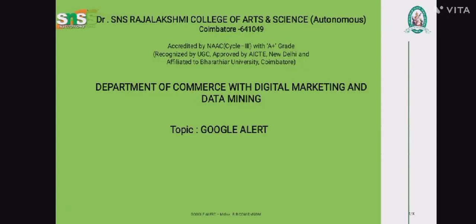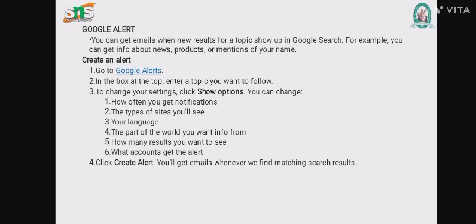Hello all, myself Mitra from Department of Commerce, Digital Marketing and Data Mining. Today we are going to see about Google Alerts. The word Google Alerts means you can get emails when new results for a topic show up in Google search. For example, you can get info about news, products, or mention of your name.